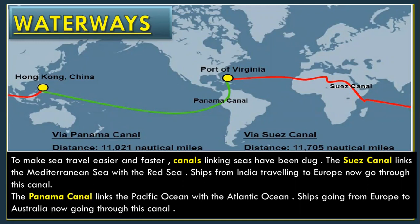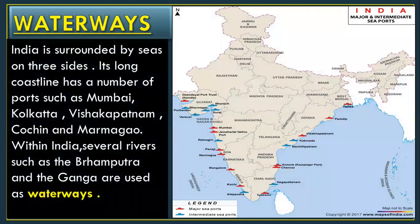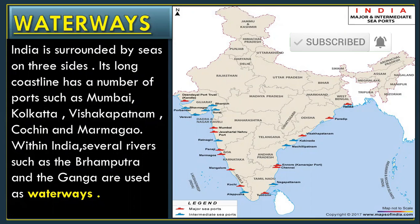The Panama Canal links the Pacific Ocean with the Atlantic Ocean. Ships going from Europe to Australia now go through this canal. As you can see on the map, India is surrounded by seas on three sides. Its long coastline has a number of ports. There are many ports like Mumbai, Kolkata, Vishakhapatnam, Kochin and Marmagao. These ports means bandar gah. Within India, several rivers such as the Brahmaputra and the Ganga are used as waterways.